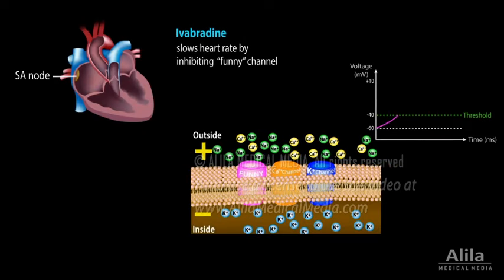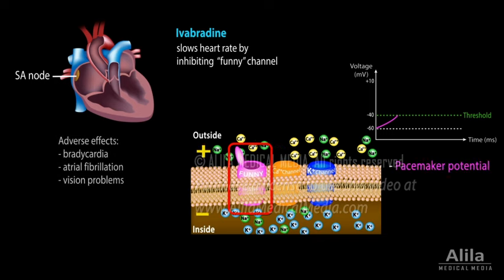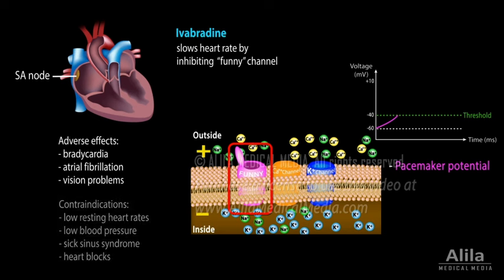Ivabradine slows the heart rate by inhibiting the funny channel responsible for spontaneous firing of the SA node. Adverse effects include bradycardia, atrial fibrillation, and vision problems. Ivabradine should be avoided in patients with a low resting heart rate, low blood pressure, and certain heart conditions.